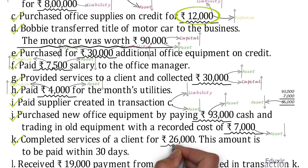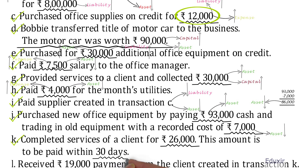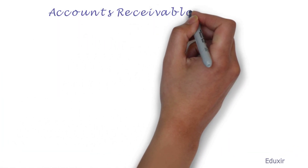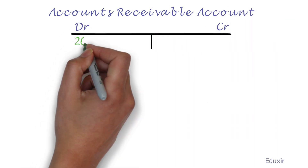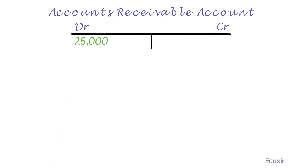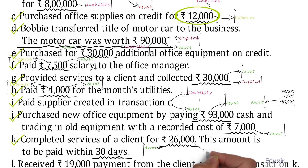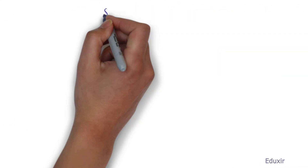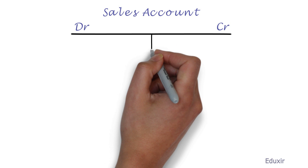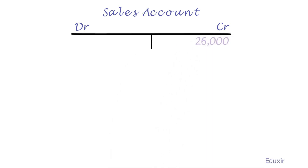Let us now deal with transaction K. The business has provided services worth 26,000 to the client, but the client has promised to pay after 30 days. So there is an increase in the asset — accounts receivable. The rule is to debit the corresponding asset account, so we debit 26,000 to the accounts receivable account. In this transaction, there is revenue generated for the business in the form of sales, so there is an increase in the revenue. The rule to record an increase in revenue is to credit the corresponding revenue account — the sales account. We credit 26,000 to the sales account. That covers transaction K.